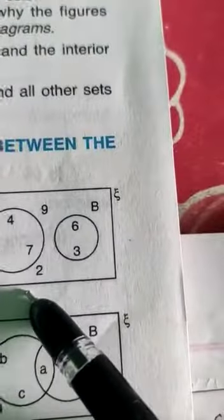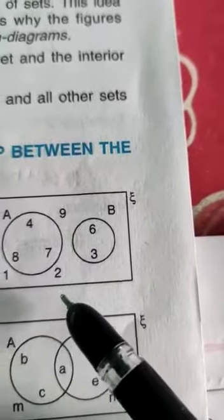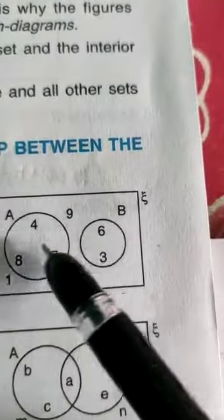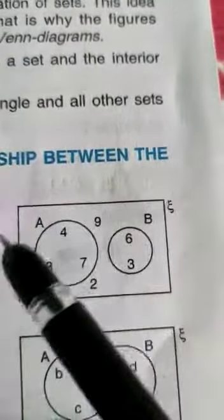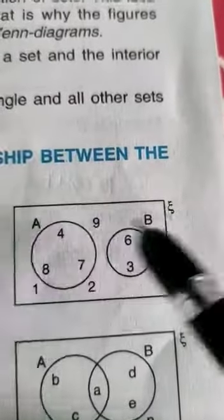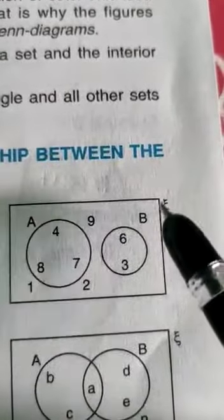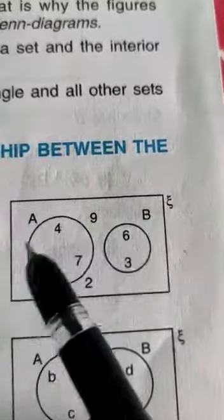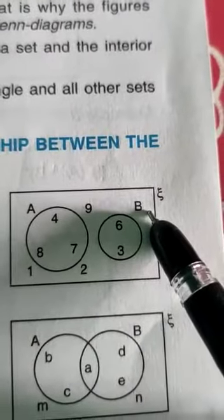This is the figure of disjoint set children. Disjoint mean, which is not common. So this is the circle. This is a universal set, xi. Inside the universal set, set A and B elements contain.